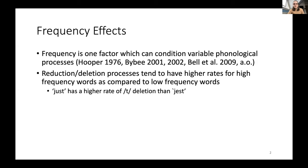Frequency is a factor that can condition variable phonological processes. There's a tendency for reduction and deletion processes to have higher rates for higher frequency words compared to lower frequency words. For example, the word 'just' has a much higher likelihood of deleting that final T. When I refer to frequency, I'll always be talking about token frequency, and when I talk about how often a word undergoes a process, I'll use the term rate of application.